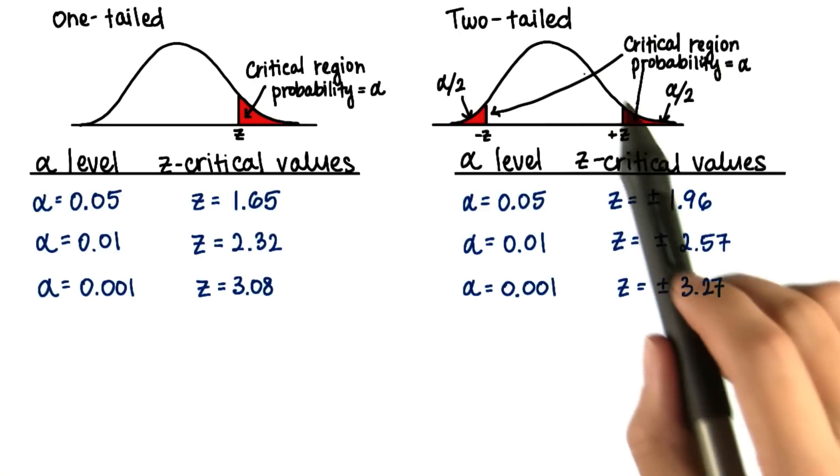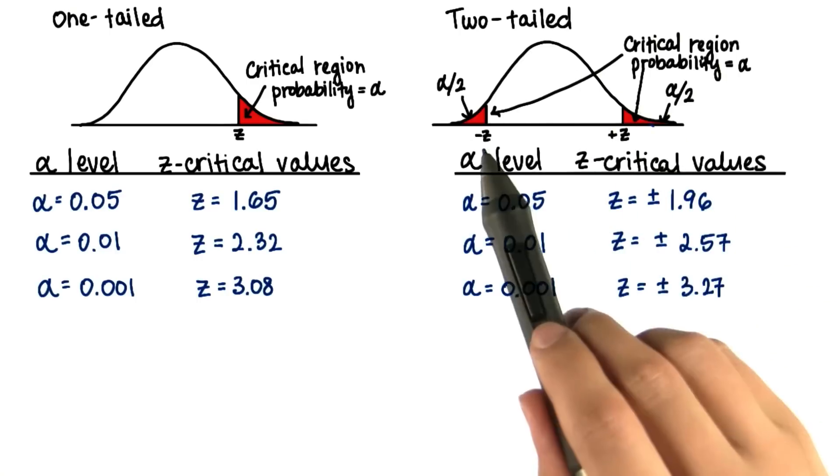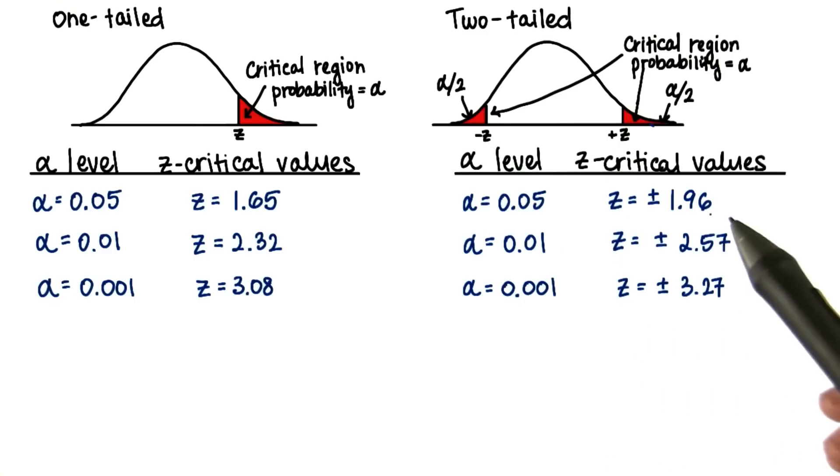Note that in the case of a two-tailed test, the z-critical values are the same used to calculate confidence intervals. Here, you're just applying the same ideas to different situations.